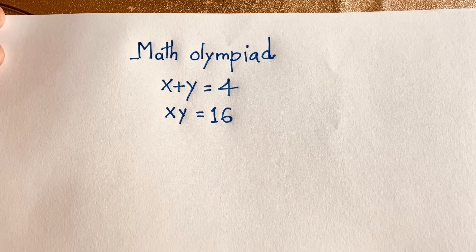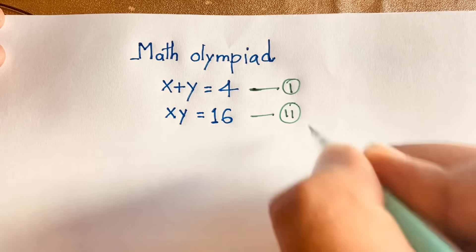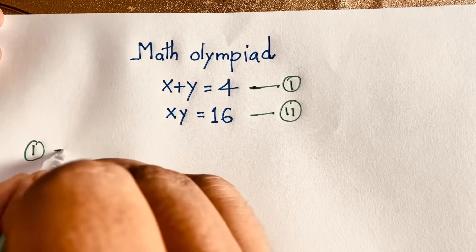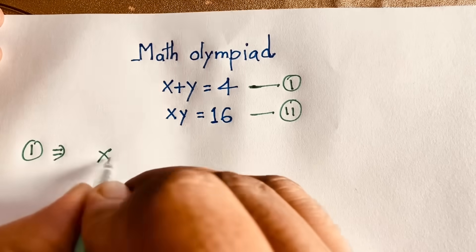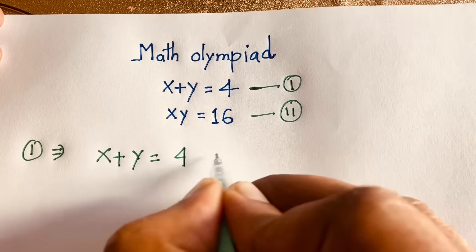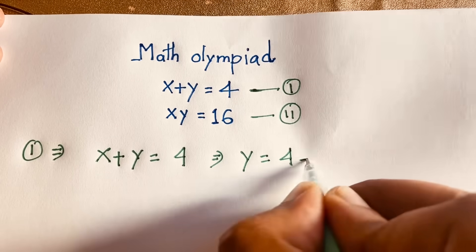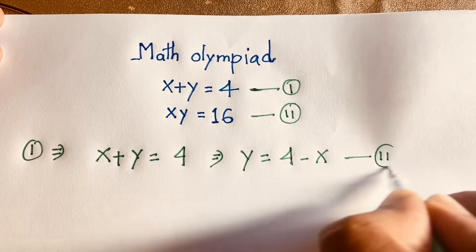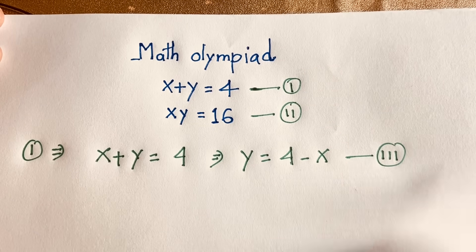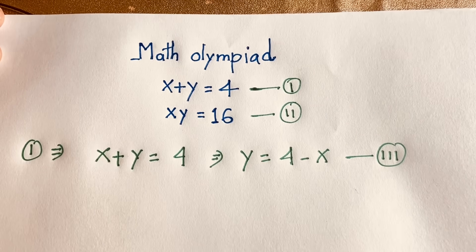This is our first equation, and this is our second equation. From the first equation, x plus y equals 4, I rearrange to get y equals 4 minus x. Moving x to the right side gives negative x. This is our third equation.